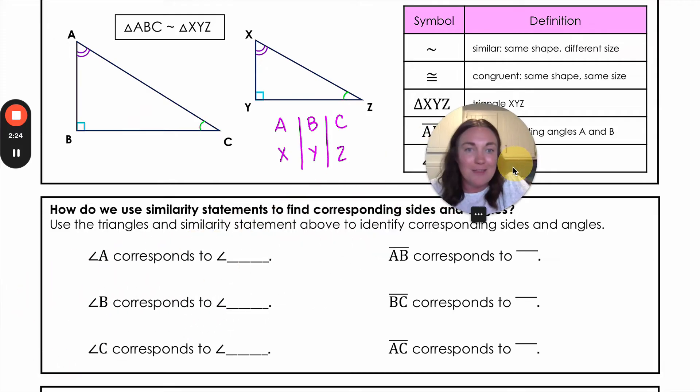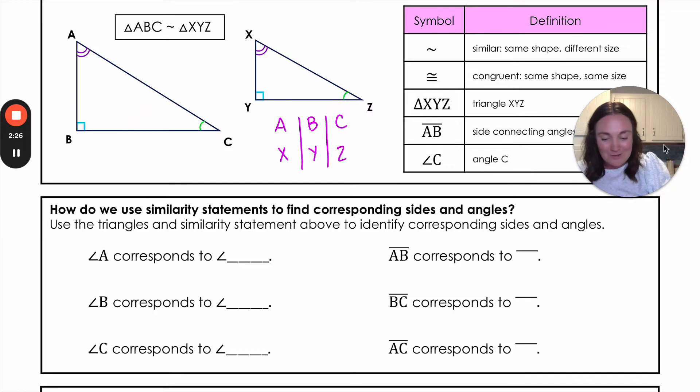Let me get my little face out of the way. Exactly what we just said. Angle A is going to correspond to angle X. B is going to correspond to angle Y. And angle C is going to correspond to angle Z. Remember that corresponding angles are congruent. So if I know that angle A is 30 degrees I know X also has to be 30 degrees.